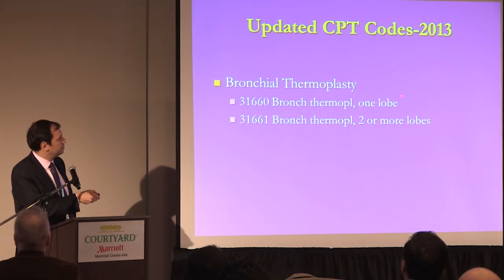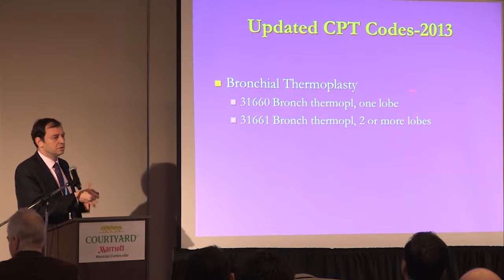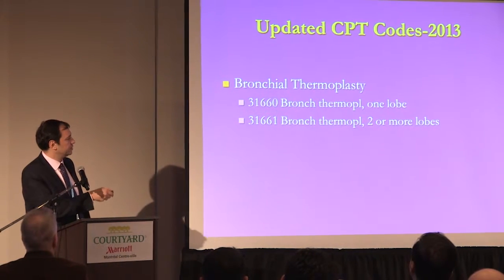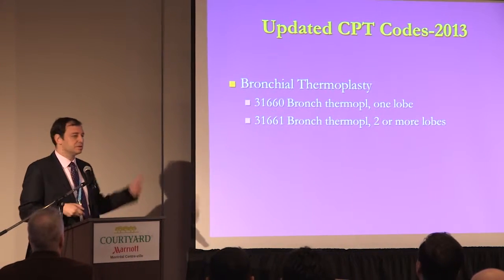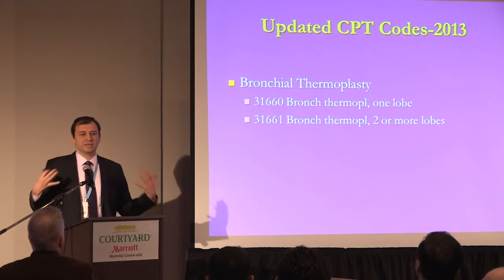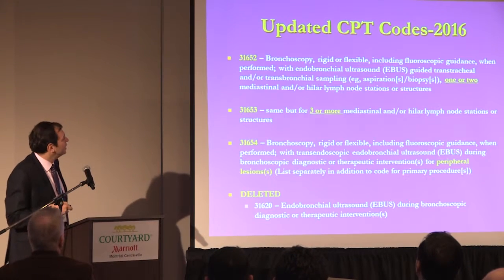Bronchothermoplasty was added in 2013. If you do one lobe — usually the lower lobe at a time — you use the code 31660. If you do the upper lobes together, that's a little bit more money, recognizing that you're doing two lobes.